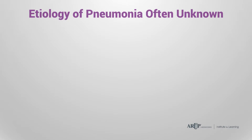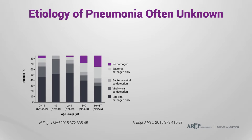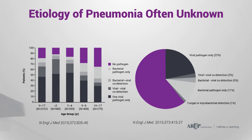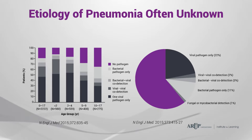This graph shows results from two national pneumonia studies sponsored by the CDC. Both graphs demonstrate that in approximately 20% of children and 60% of adults, the cause of pneumonia could not be identified despite comprehensive diagnostic testing.